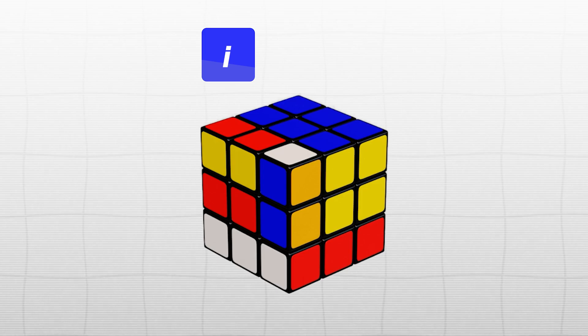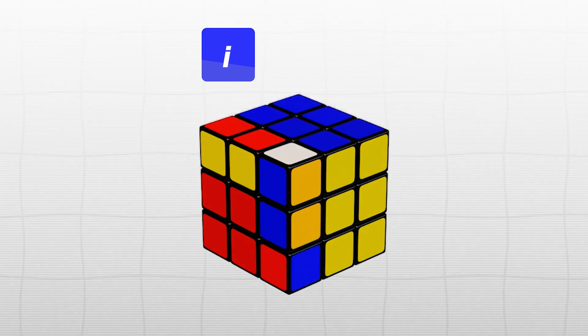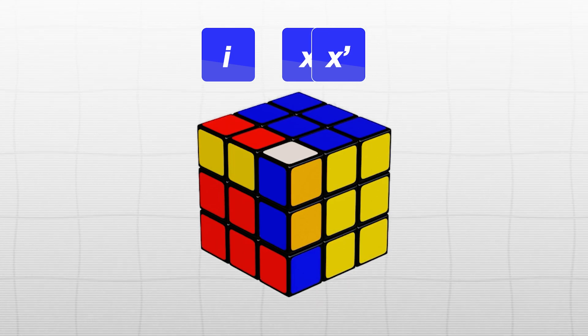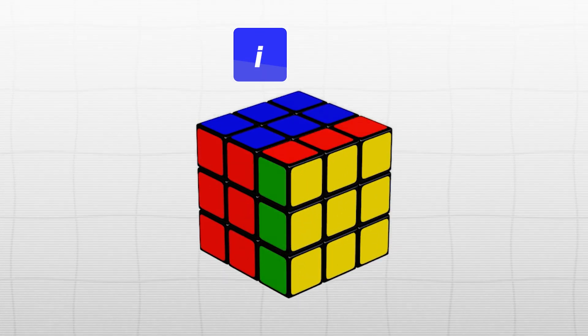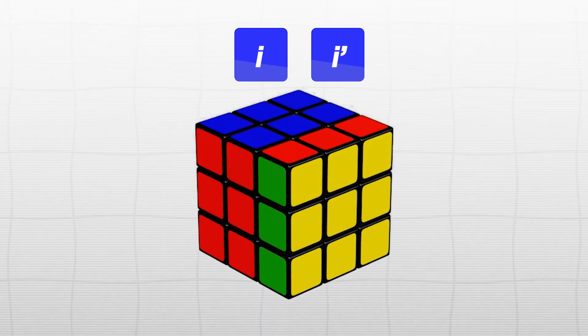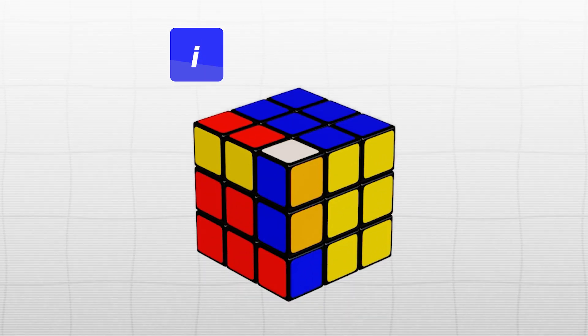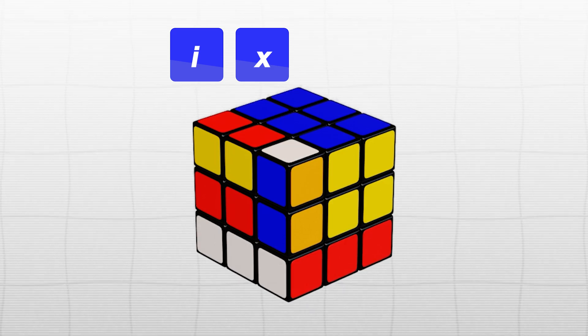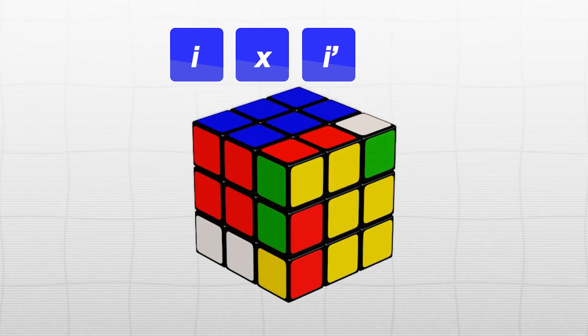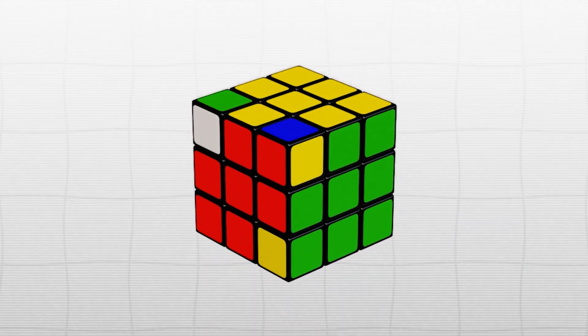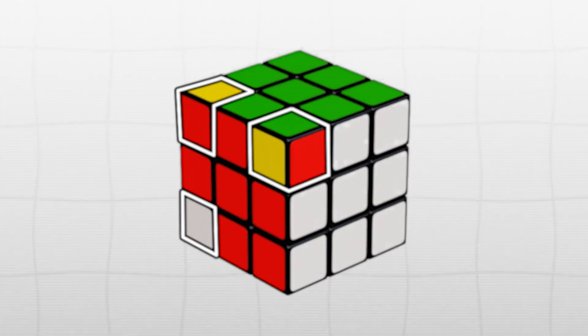If we do another turn like this, it only moves one of the messed up pieces at a time, but undoing it obviously does nothing, and doing and undoing the three moves also does nothing. But if we do the three moves, then move this layer down here, then undo the three moves, then this layer once more, we resolve everything except these three corners.